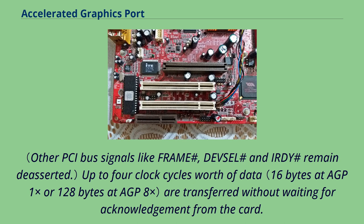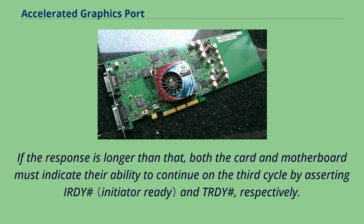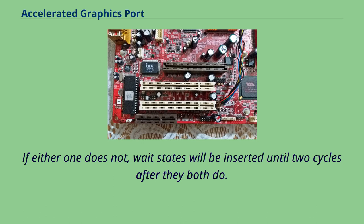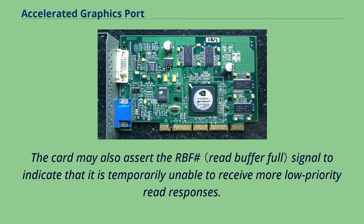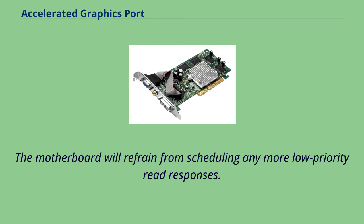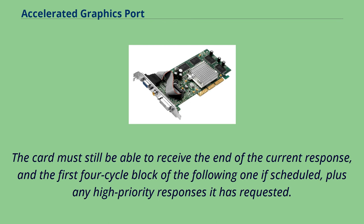Up to four clock cycles' worth of data are transferred without waiting for acknowledgement from the card. If the response is longer than that, both the card and motherboard must indicate their ability to continue on the third cycle by asserting IRDY# and TRDY# respectively. If either one does not, wait states will be inserted until two cycles after they both do. The CB# byte-enable lines may be ignored during read responses, but are held asserted by the motherboard. The card may also assert the RBF# signal to indicate that it is temporarily unable to receive more low-priority read responses. The motherboard will refrain from scheduling any more low-priority read responses. The card must still be able to receive the end of the current response, and the first four-cycle block of the following one if scheduled, plus any high-priority responses it has requested.